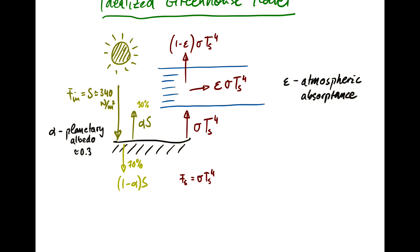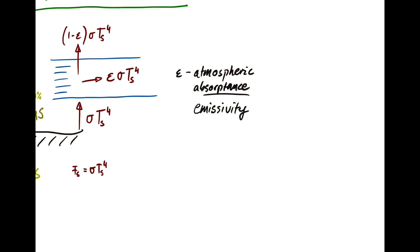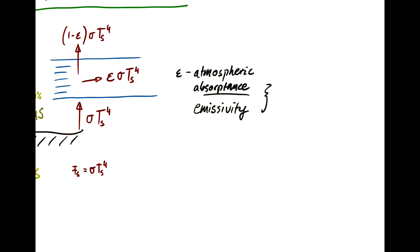There is a law in physics called Kirchhoff's law, which tells us that for a body like the atmosphere, the absorbance is exactly the same as the emissivity. The atmosphere absorbs radiation at the same rate as it emits energy. Absorbance and emissivity are the same thing, and that is what's known as Kirchhoff's law.